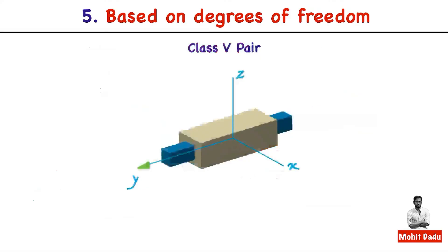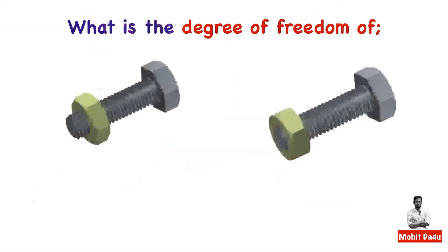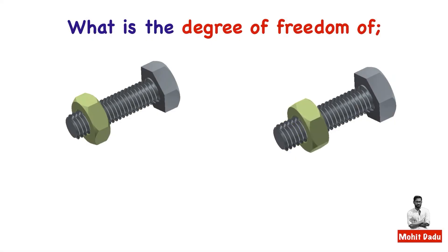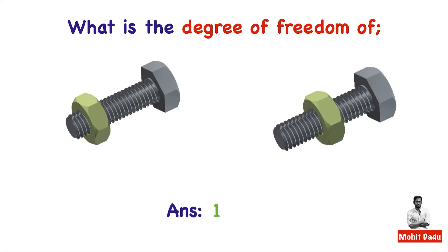We have now covered all five classification criteria for kinematic pairs: based on motion, contact, closure, constrained motion, and degrees of freedom. In the next lecture, we will study mechanisms and their degrees of freedom. A closing question: what is the degree of freedom of a screw pair, where the nut both turns and slides? You might answer 2, but the degree of freedom is actually 1.